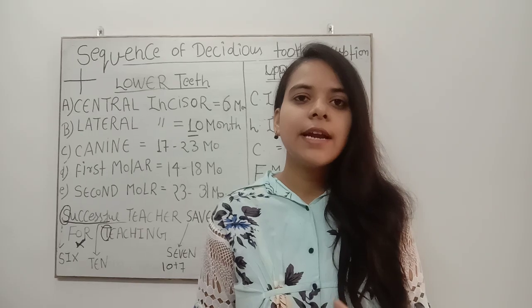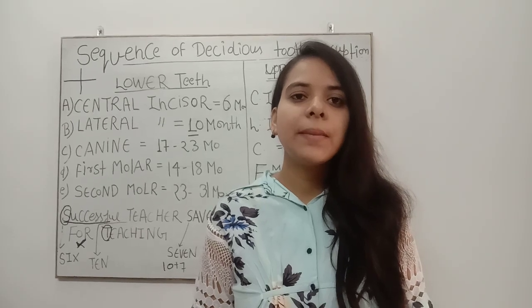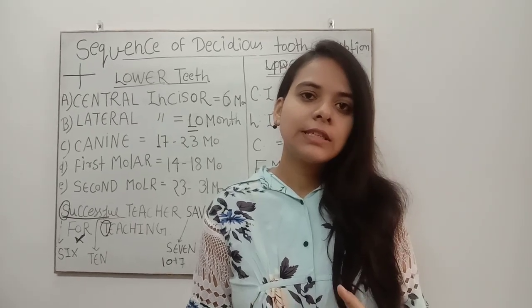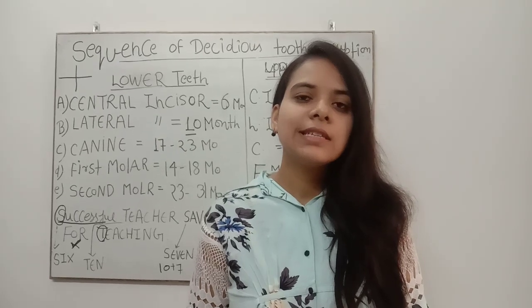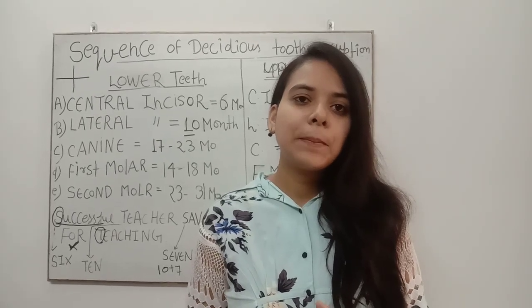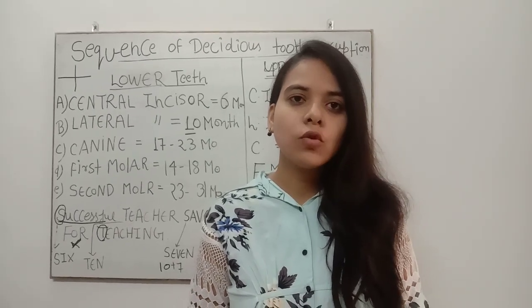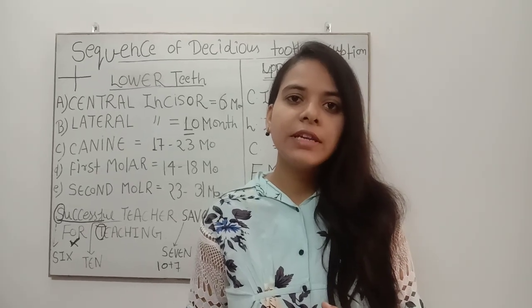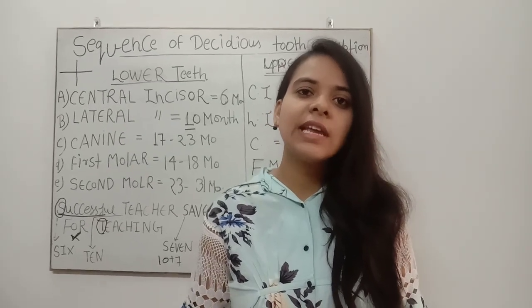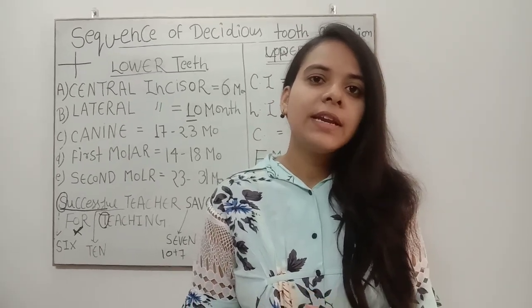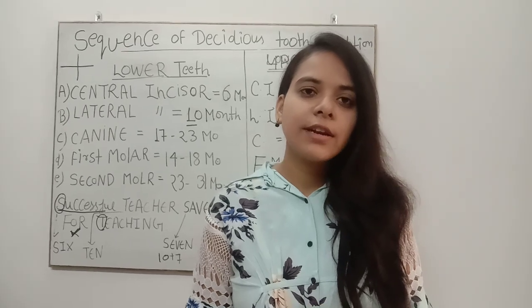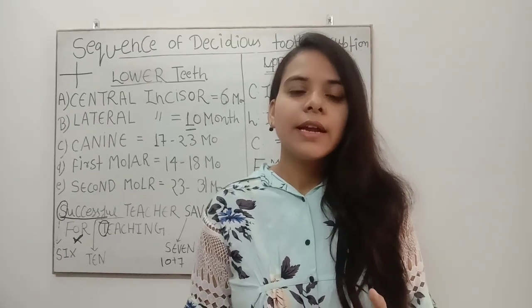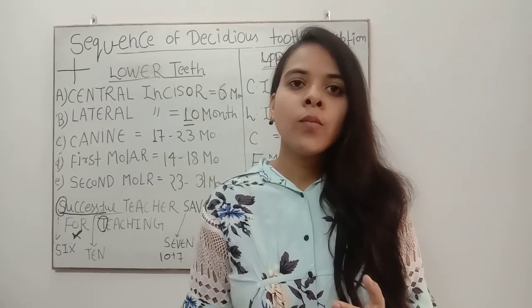The deciduous dentition is the dentition which appears in children only. The first teeth to erupt is the lower central incisor, which erupts at the six month age group. The permanent dentition is seen in adults. The primary or deciduous dentition contains central incisor, lateral incisor, canine, and molars.